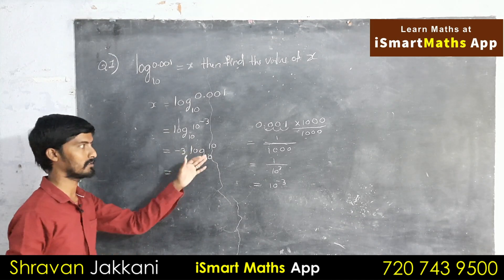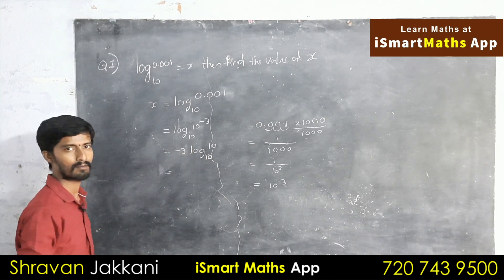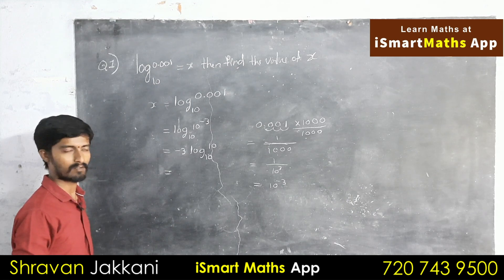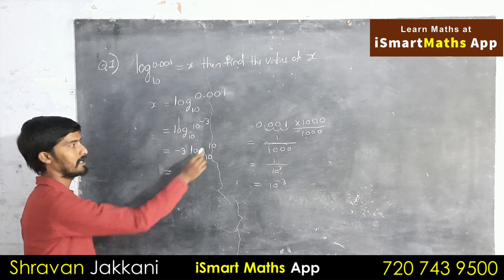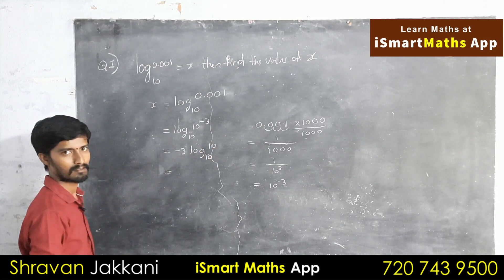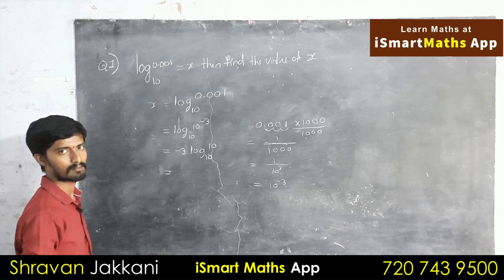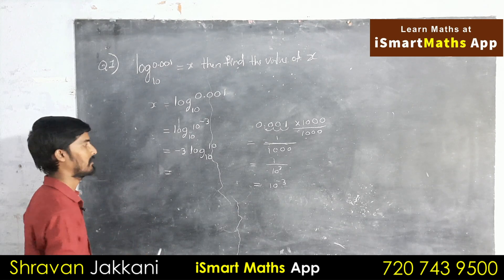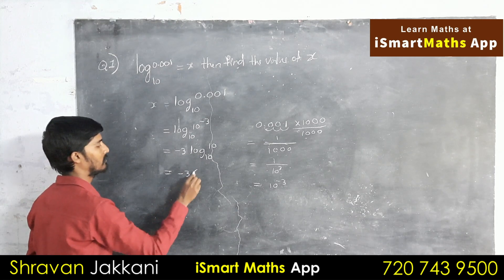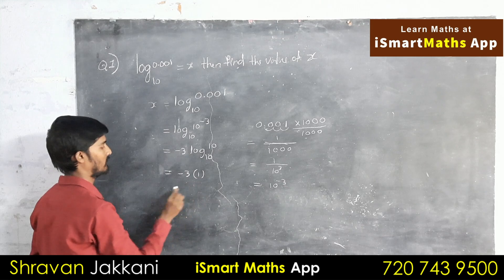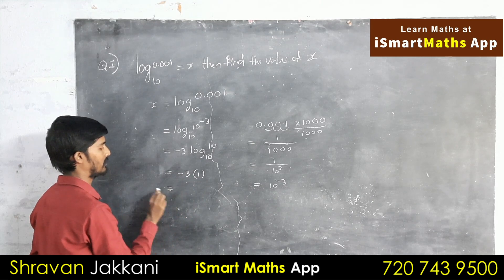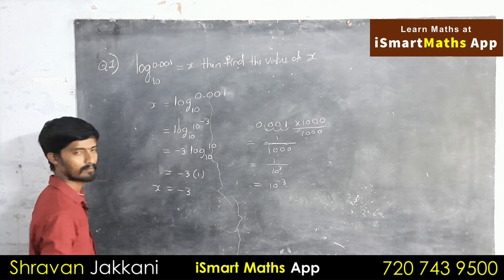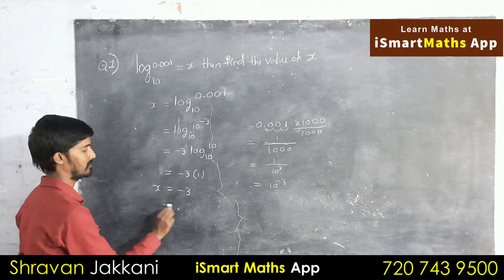Now, log 10 base 10. Using the identity: log a base a equals 1. So log 10 base 10 equals 1. Therefore, minus 3 into 1 gives x equals minus 3. So this is the answer.